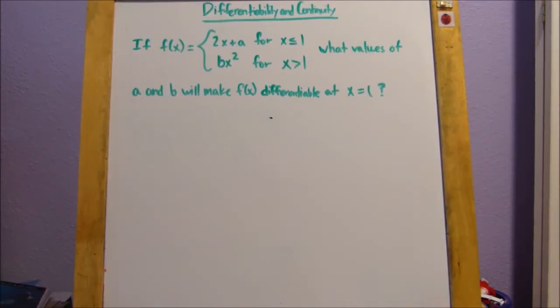All right? Okay, so now we have this example problem. If f of x equals 2x plus a, for x is less than or equal to 1, and b times x squared, for x is greater than 1, what values of a and b will make f of x differentiable at x equals 1? All right,